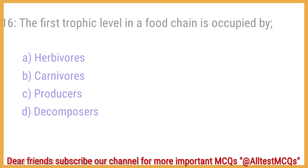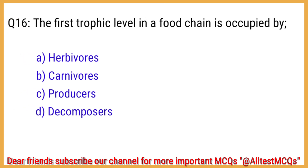Q16. The first trophic level in a food chain is occupied by? The correct answer is option C: Producers.